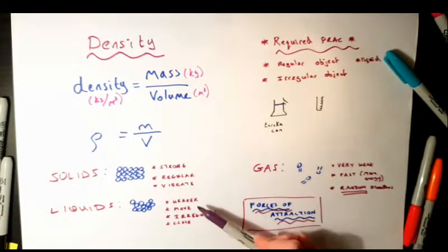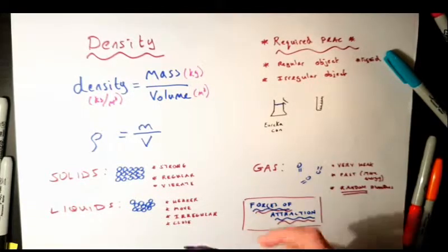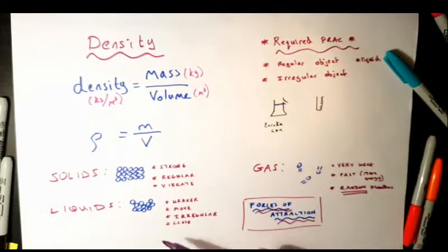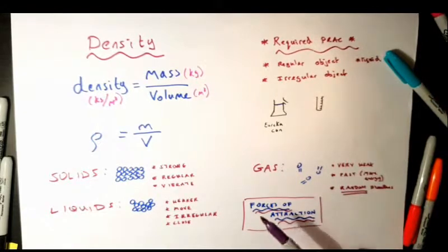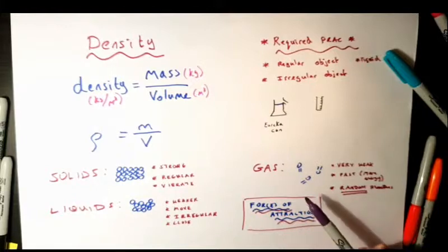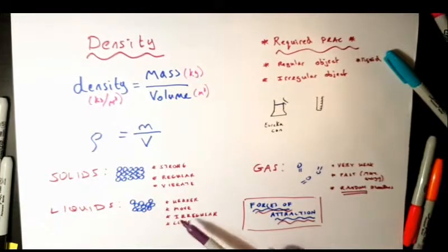In liquids, the forces of attraction are a bit weaker, which is why they can move around each other and take an irregular shape — filling the container you pour them into. They're still close and touching though. Some people make the mistake of drawing a liquid like a gas with particles far apart. Gases have very weak forces of attraction, so they're free to move around quickly and in random directions.